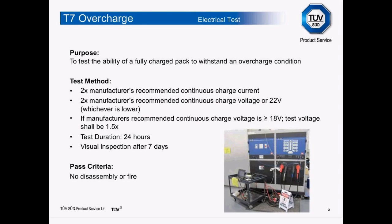The T7 test is the overcharge test, evaluating the pack's ability to withstand an overcharge condition. The charge current is set to two times the maximum recommended continuous charge current. The voltage is set to either two times the manufacturer's recommended continuous charge voltage or 22 volts, whichever is lower. If the rated charge voltage exceeds 18 V, the test voltage ratio is reduced to 1.5 times rather than 2 times. Test duration is 24 hours, followed by a visual inspection after seven days; no disassembly or fire shall occur.